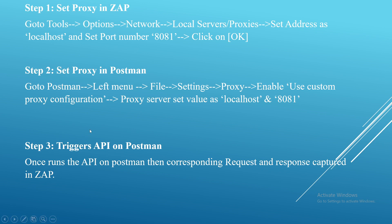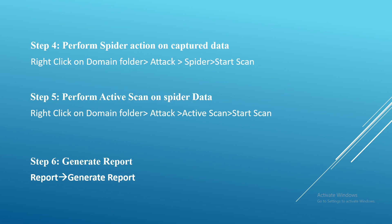Step 3 is to trigger the API on Postman. Once the API sends the request, it will be captured in ZAP. Step 4 is to perform the spidering action on the captured data — that means right-clicking the folder in the site tree, then Attack > Spider > Start Scan. The spidering action will take place in step 4.